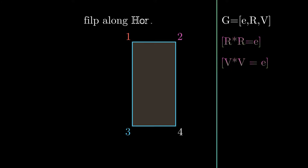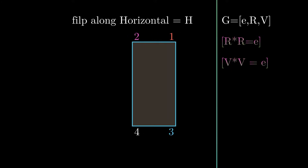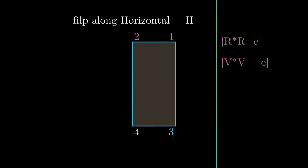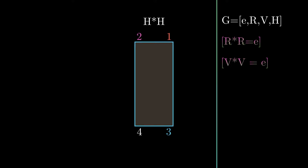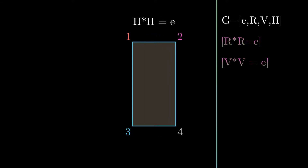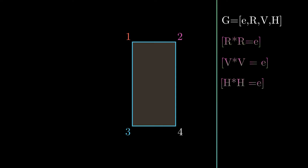Also, let's flip along the horizontal axis and call it big H. Now we get a new element for G — so G now has four elements. If you keep flipping along horizontally once again, you will get the original element E, as you can see in the animation.